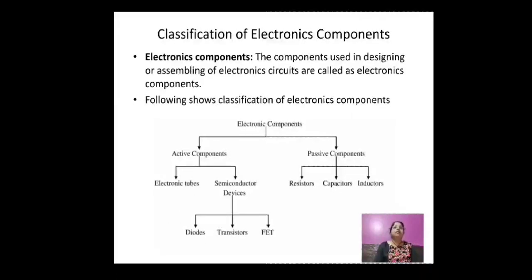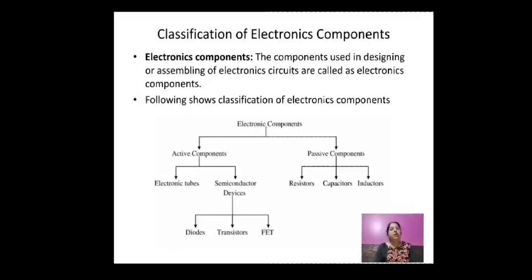Now, what are electronics components? Electronic components are the components used in designing and assembling of electronic circuits. Electronic components are classified into two types: active components and passive components. In active components there are two types: electronic tubes and semiconductor devices. In semiconductor devices there are examples like diode, transistors, FET. In passive components there are three basic types: resistors, capacitors, and inductors.